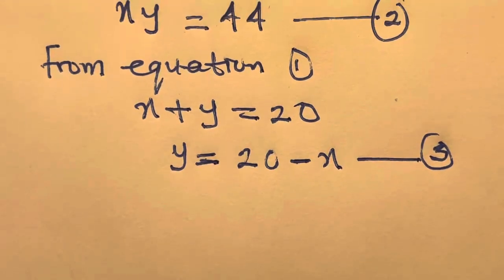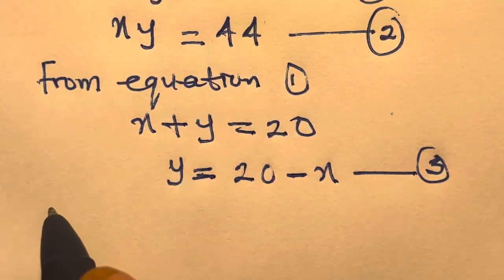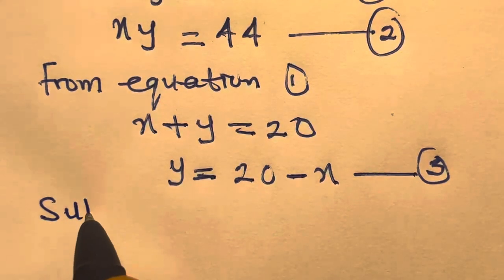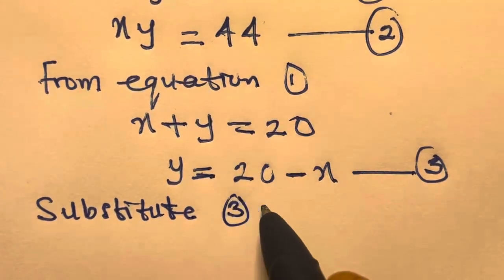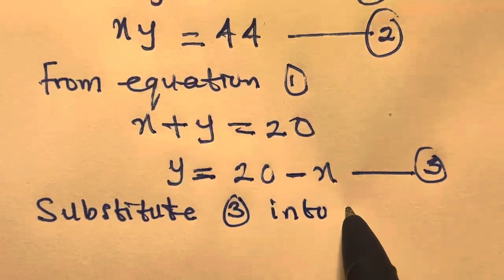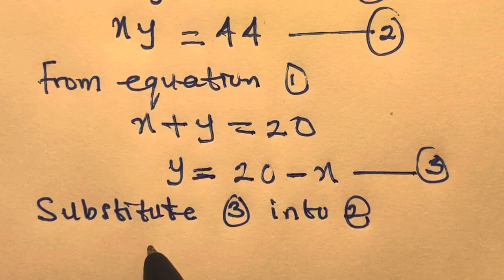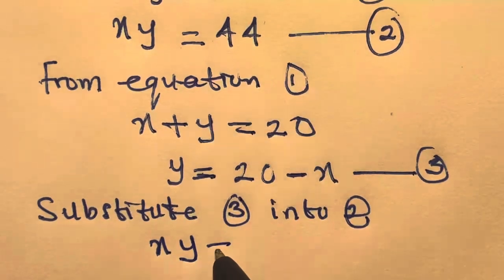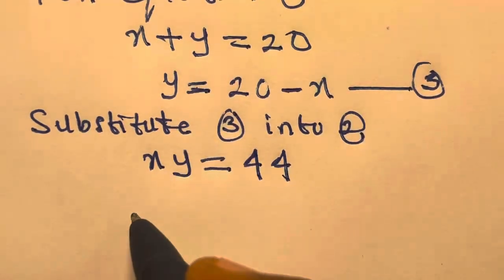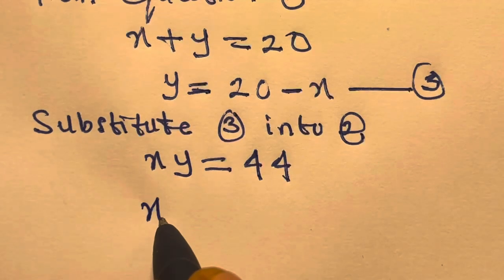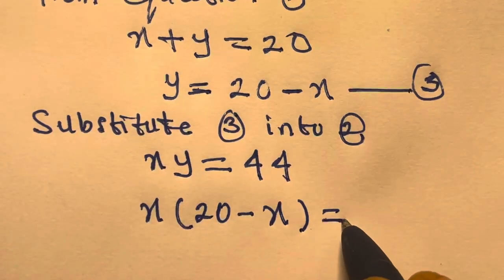From here, we substitute equation 3 into equation 2. By equation 2, we have x times y equals 44. Therefore, here we will have x multiplied by 20 minus x equals 44.